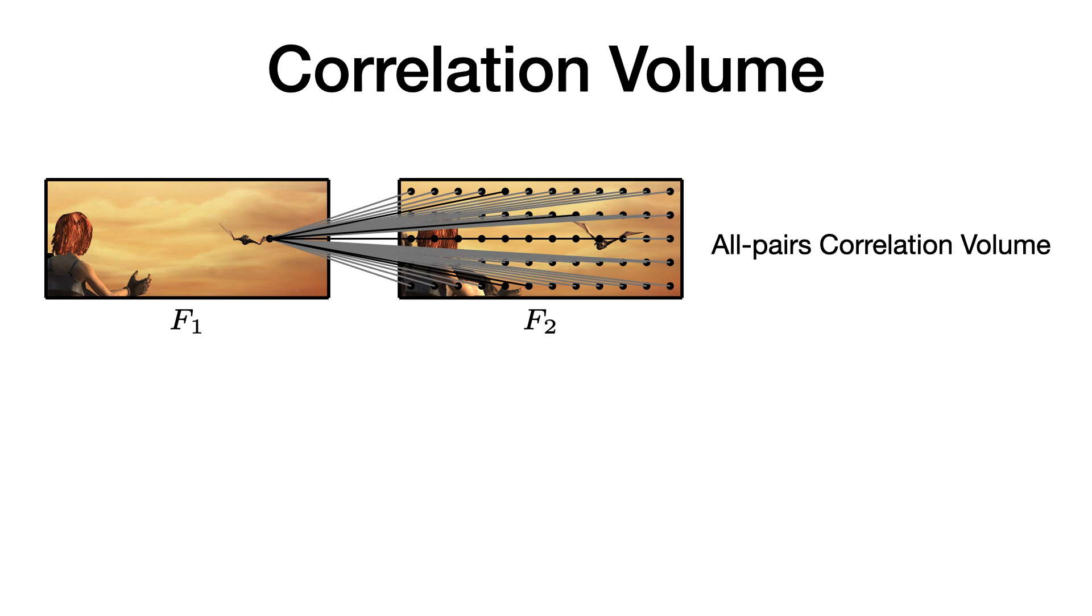Each feature vector is computed in a dot product with all feature vectors in the other feature map. The size of the correlation volume is thus quadratic to the number of pixels. Due to the memory constraint, feature maps are downsampled to 8th resolution of the original image.